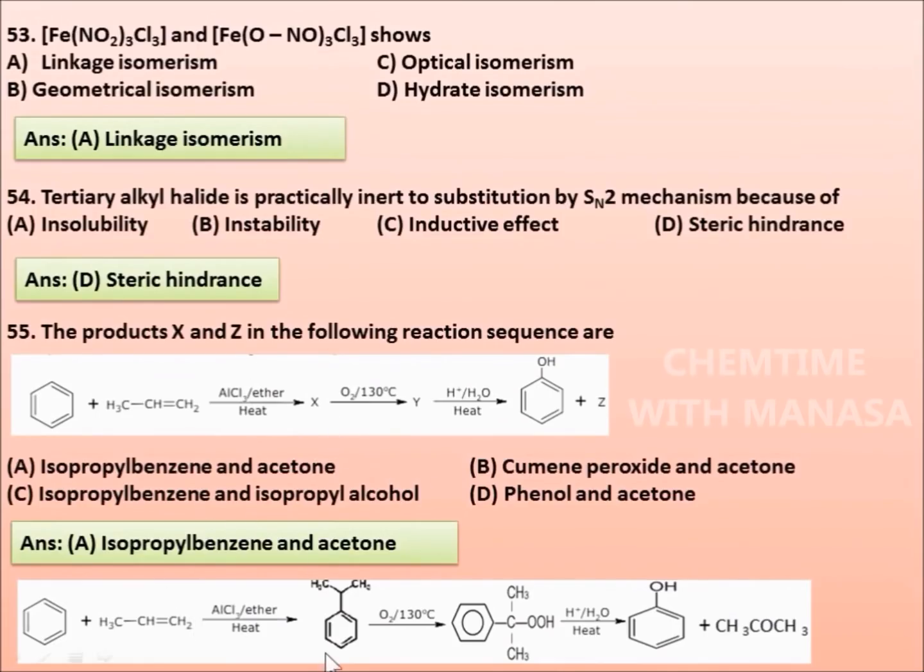Here, X is isopropylbenzene and Z is acetone. Then question 56: The appropriate reagent for the following transformation is, here, 1,3-hydroxycyclopenthalethanone is converted into 3-ethylcyclopentanone.